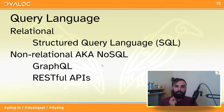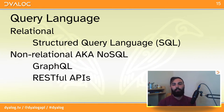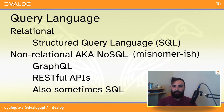SQL dialects have a lot of things in common but also features unique to each database system. A lot of the basic operations are pretty much the same. Non-relational databases are also sometimes known as NoSQL databases, since a lot of them won't use SQL. For example, there's GraphQL for graph databases, or especially these days many database systems offer web APIs so you can make HTTP requests instead of using other connection methods.